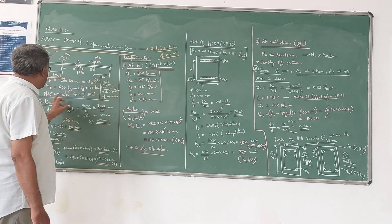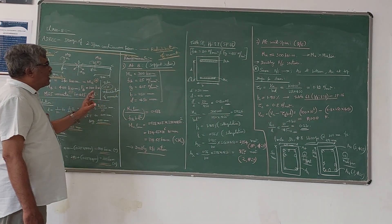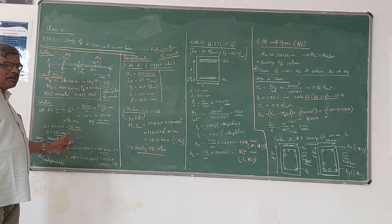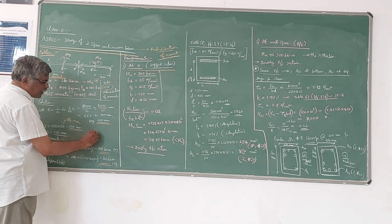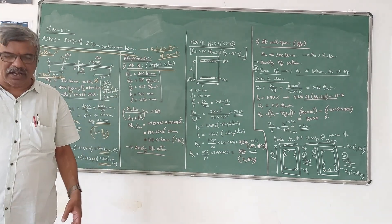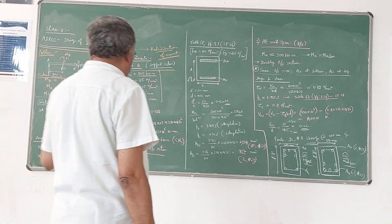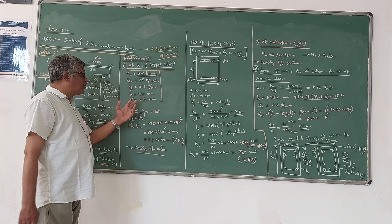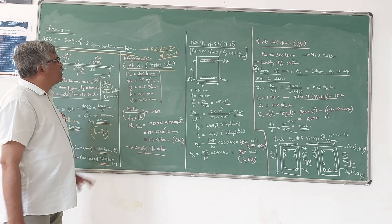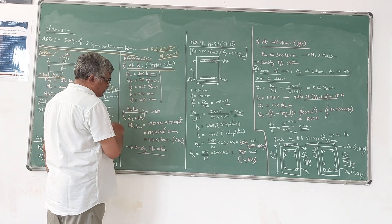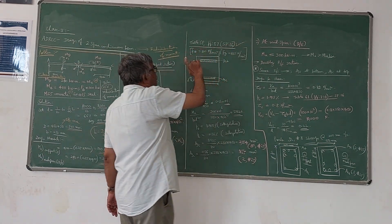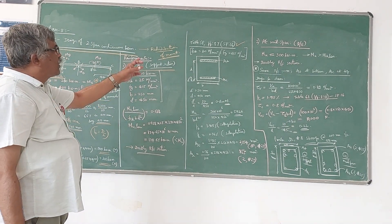The grade of concrete FCK is 25 and FY is 415. Width b is 250 mm and effective depth d is 450 mm. Before using the SP-16 table, we have to check whether the section is singly or doubly reinforced. For that, we calculate MuLim/FCK·bd². As per IS456, MuLim/FCK·bd² equals 0.138 for FY = 415 N/mm². The relevant table is on page 87, Table 51 of SP-16.